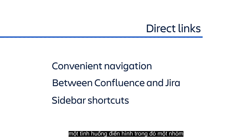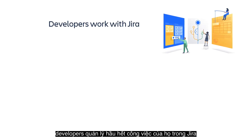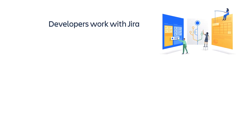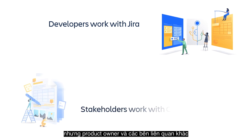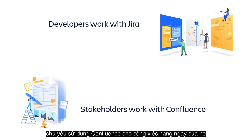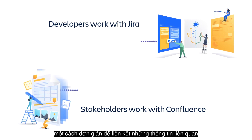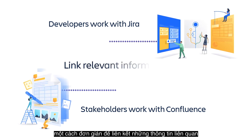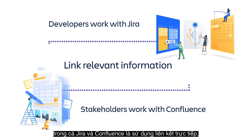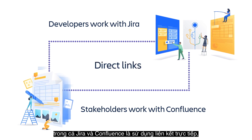Take a typical situation in which a team of developers manage most of their work in Jira, but the product owner and other stakeholders primarily use Confluence for their daily work. One simple way of tying together relevant information in both Jira and Confluence is to use direct links.